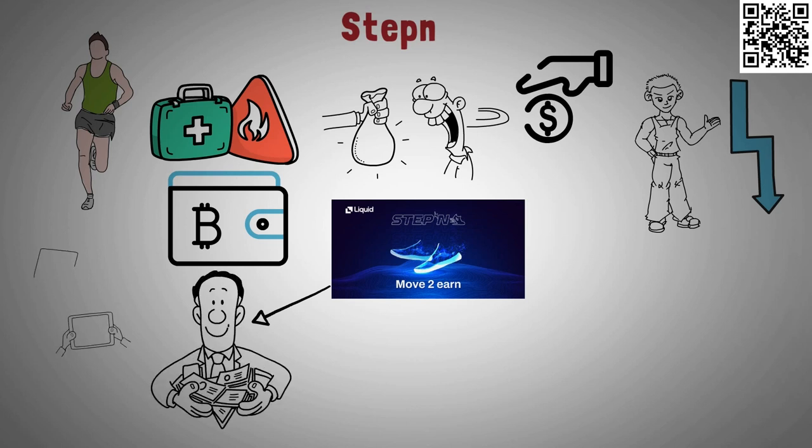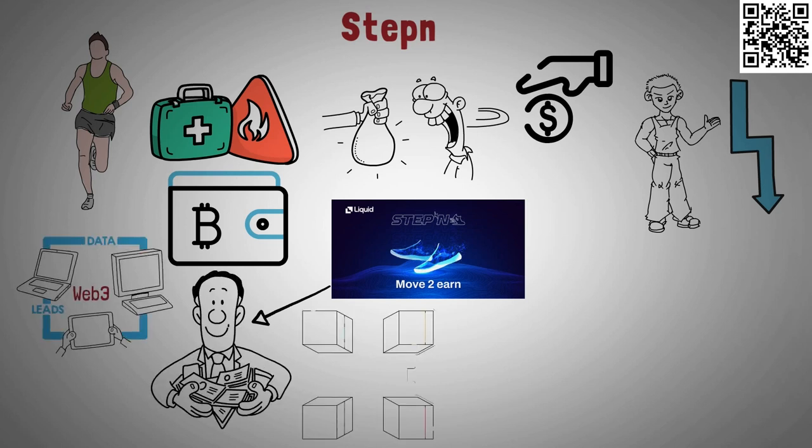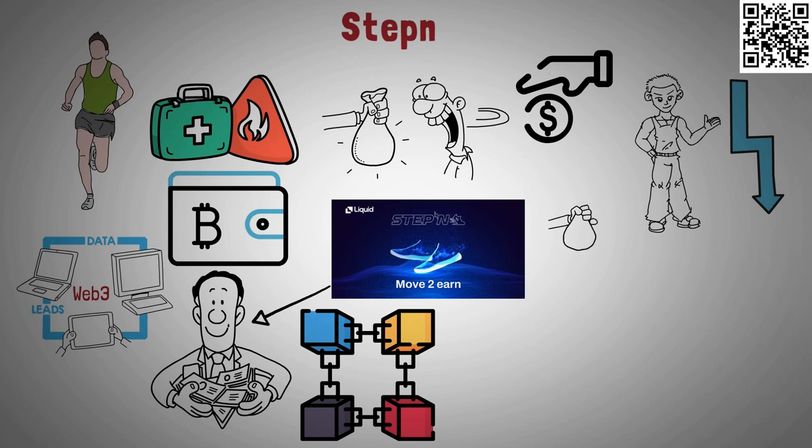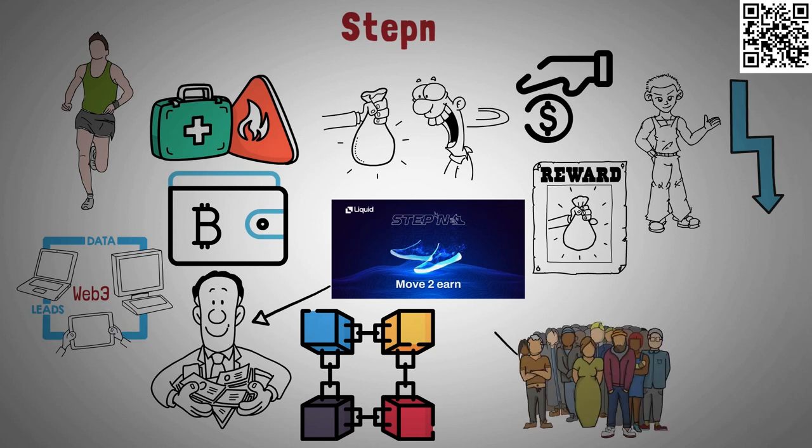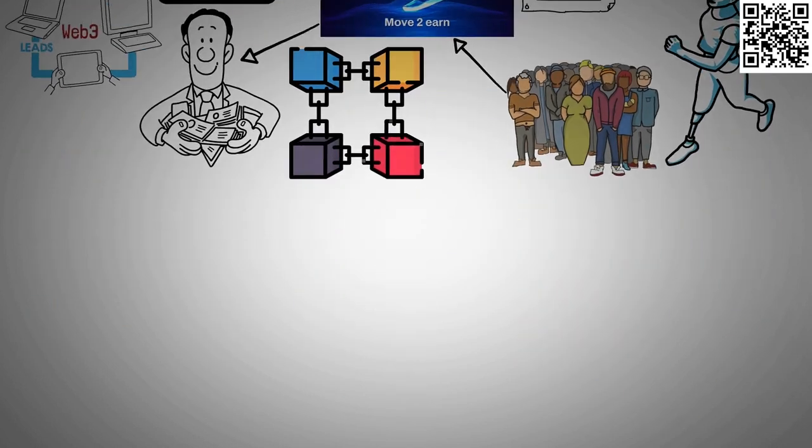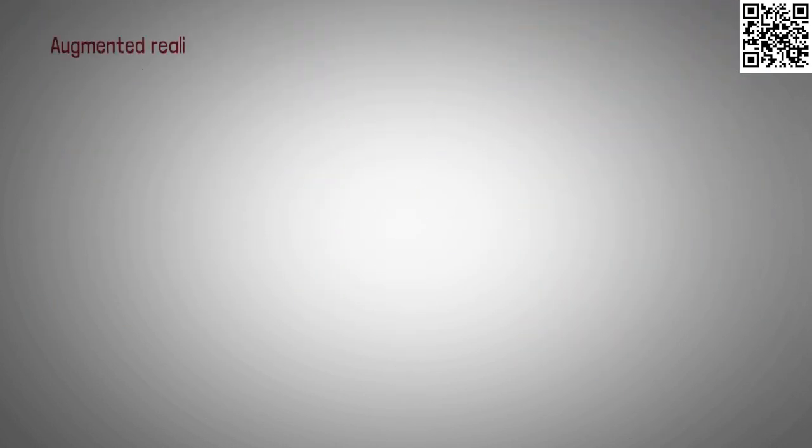Stepin is a move-to-earn Web3 app which works on Solana blockchain. Stepin gives you cash rewards every time you work out. This concept has already magnetized millions of people towards it and take up running as a habit. Stepin uses state-of-the-art technology like AR or augmented reality and play-to-earn gaming to reward its users for all the calories they burn.